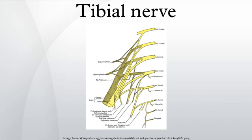In the foot, the nerve divides into medial and lateral plantar branches. The medial plantar nerve supplies the abductor hallucis, the flexor digitorum brevis, the flexor hallucis brevis, and the first lumbrical. Cutaneous distribution of the medial plantar nerve is to the medial sole and medial three and one half toes, including the nail beds on the dorsum.